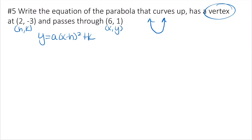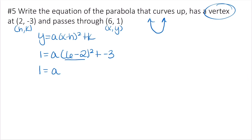Plugging in: y equals 1, x equals 6, h equals 2, and k equals negative 3. So 1 equals a times 6 minus 2 squared plus negative 3. Simplifying using order of operations: 6 minus 2 is 4, 4 squared is 16, so 1 equals 16a minus 3.